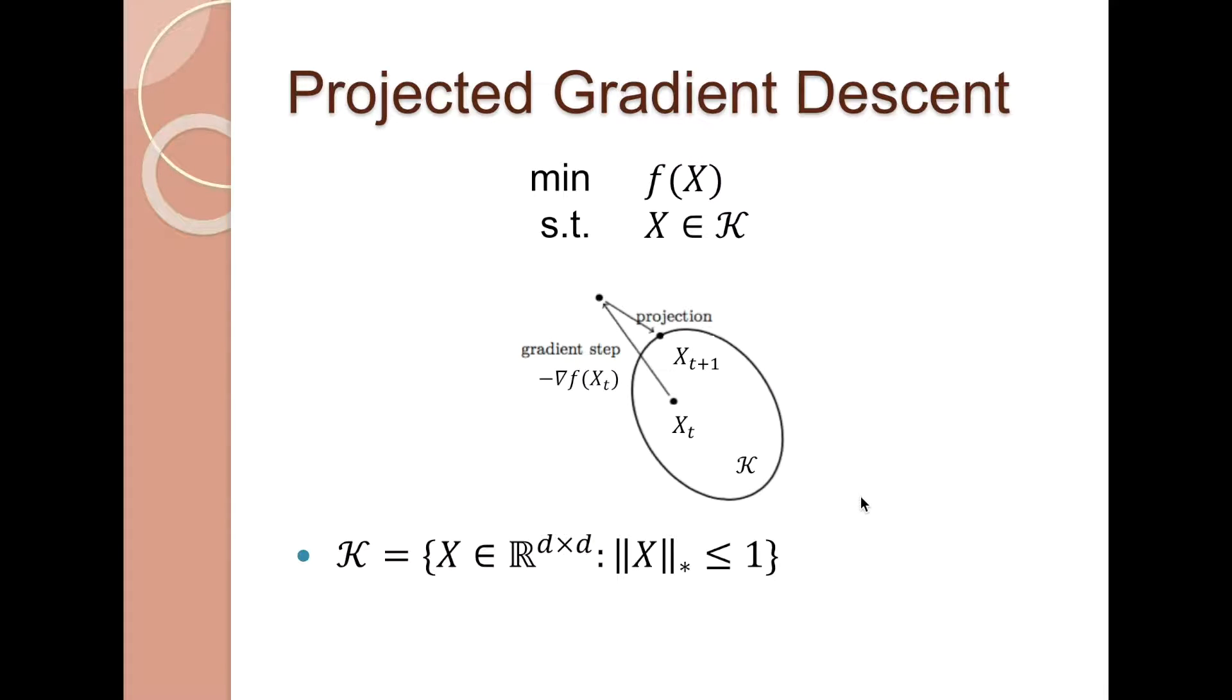What's the issue of this algorithm? For the trace norm ball constraint, it turns out that the projection step requires doing a full singular value decomposition of a matrix, which takes d-cubed time in general. This is impractical even for moderate problem size.